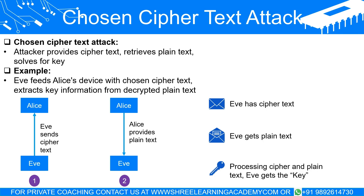The chosen cipher text attack is another variant where the attacker has the power to choose the cipher text to be decrypted. This is more complex and requires a certain degree of control over the encryption system, but it can be particularly effective. Let's say that Eve, with her increased capabilities, feeds Alice's decryption device with her own chosen cipher text. When Alice's device decrypts this, Eve gains access to the corresponding plain text. By choosing specific cipher text, she can potentially extract more information about the key, giving her access to Alice's future encrypted communications.